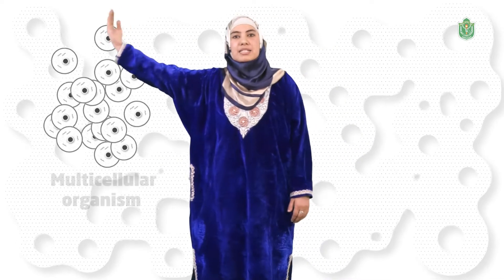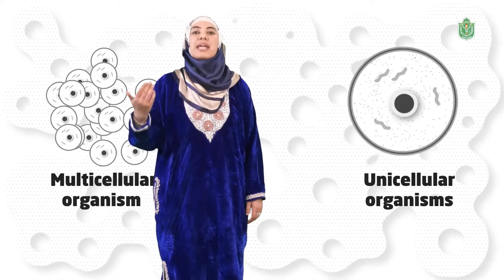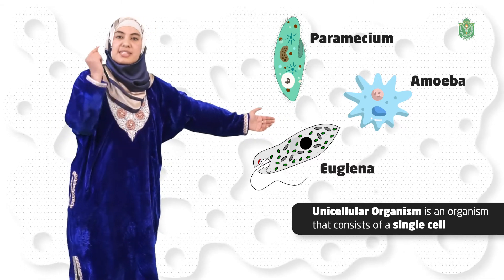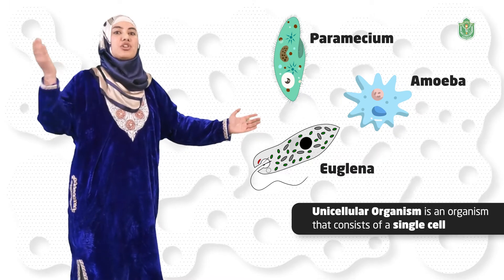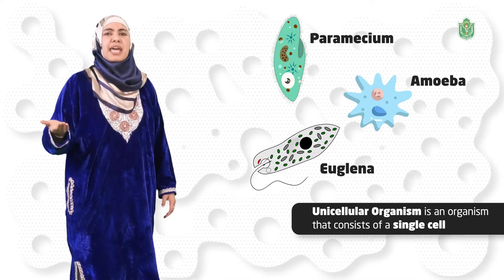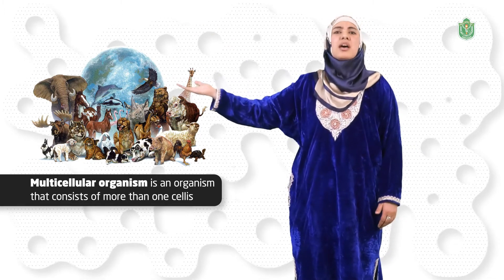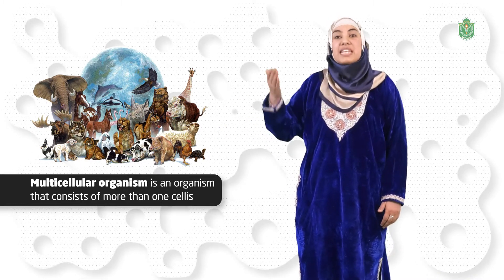Cells are complex in nature and are present in various numbers, shapes and sizes. According to the number of cells, organisms can be classified into two groups: multicellular organisms and unicellular organisms. Organisms made up of one cell are known as unicellular organisms. Paramecium, amoeba, euglena are few examples. The single cell of these organisms behaves like a complete organism and performs all the basic activities. Organisms made up of many cells are known as multicellular organisms. Most of the plants and animals around us are multicellular organisms and are made up of several billion cells.